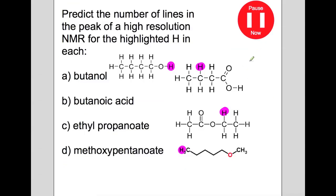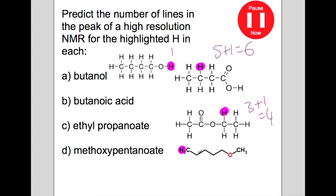Pause the video now and try and predict the number of lines for the highlighted peak in a high resolution NMR for each of these molecules. For the OH group, we would see just one peak. For this hydrogen, we have 3 on one adjacent carbon and 2 on the other, so 5+1 is 6 peaks. Here we've got 3 on the adjacent carbon and the others are too far away, so 3+1 is 4 peaks. And finally the CH3 has 2 on the adjacent carbon, so 2+1 is 3 peaks.